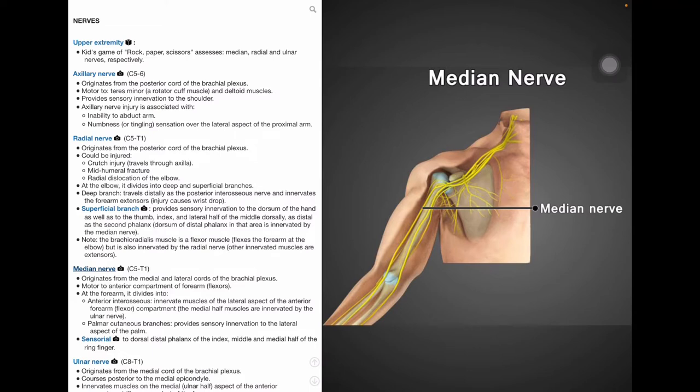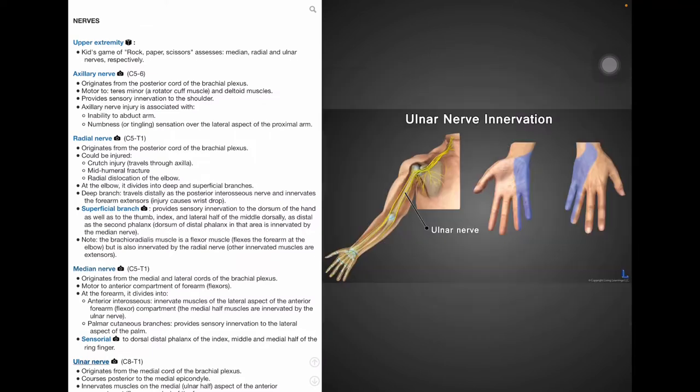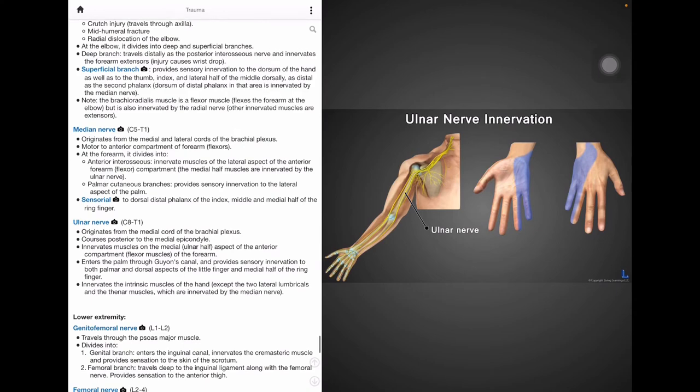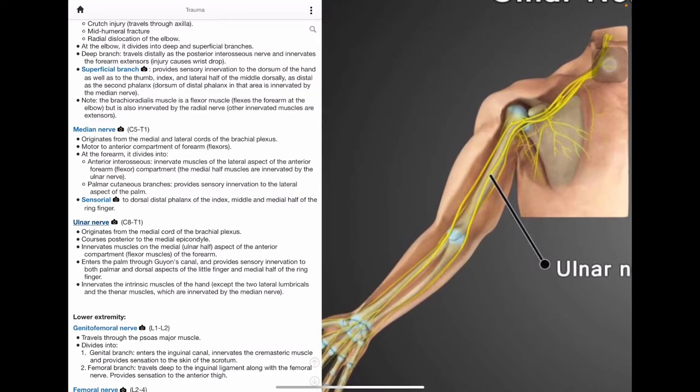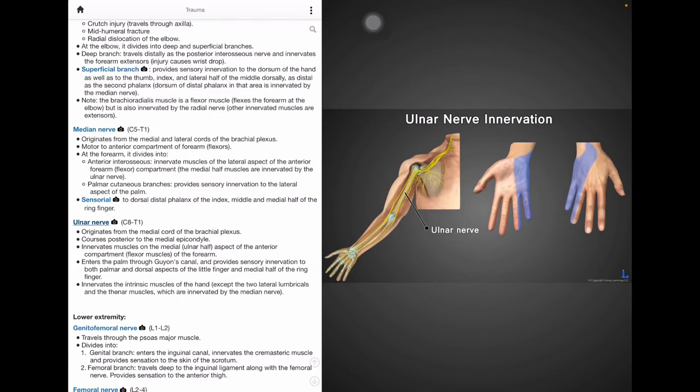For the last upper extremity nerve, we have the ulnar nerve. The ulnar nerve originates from the medial cord of the brachial plexus and then it travels posterior to the medial epicondyle, innervating muscles on the flexors on the medial side of the anterior compartment of the forearm. As it enters the palm through Guyon's canal, it provides sensory innervation to the palmar and dorsal aspects of the little finger and medial half of the ring finger. As for motor innervation, it innervates the intrinsic muscles of the hand except the two lateral lumbricals and the thenar muscles. So for ulnar nerve innervation, here we see the ulnar nerve and we can see where it comes from in the brachial plexus and in the rock paper scissors game, when we perform the scissors motion, that tests the ulnar nerve roots C8 to T1 because of the movement of the small muscles of the hand.